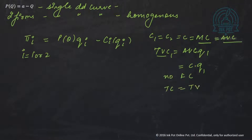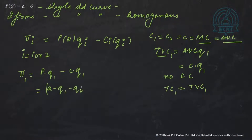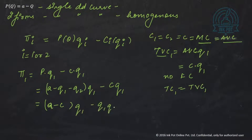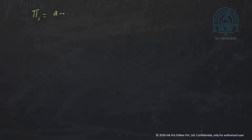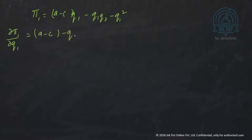Given that, Pi1 is P times Q1 minus C times Q1, which is (A minus Q1 minus Q2) times Q1 minus C*Q1. This can be rewritten as (A minus C)*Q1 minus Q1*Q2 minus Q1 squared. Then we take the partial derivative del Pi1 by del Q1, which gives us A minus C minus Q2 minus 2Q1, set equal to zero. Solving, Q1 = (A minus C minus Q2) / 2.